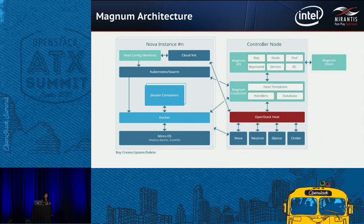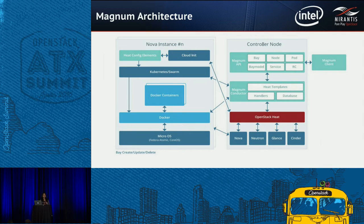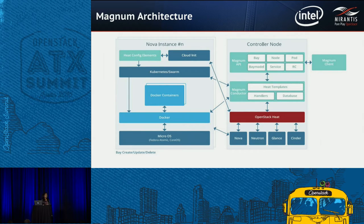When you say 'deploy a Swarm or Kubernetes cluster for me,' the Magnum conductor talks to HEAT and provides the appropriate HEAT template for that COE. HEAT then talks to other OpenStack components like Nova, Neutron, Glance, and Cinder to deploy your cluster. Once your Bay is up and running, you have a group of Nova VMs with Docker services running, and you can specify how many nodes you want. You can then run your containers using native clients or the Magnum API.